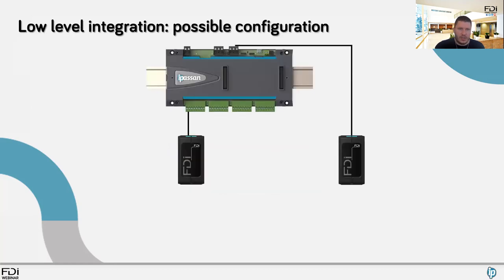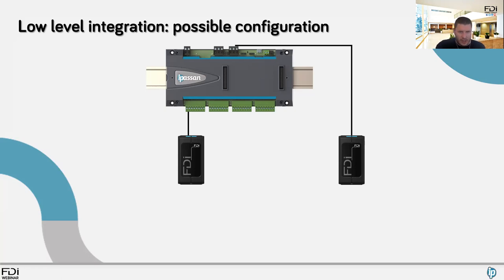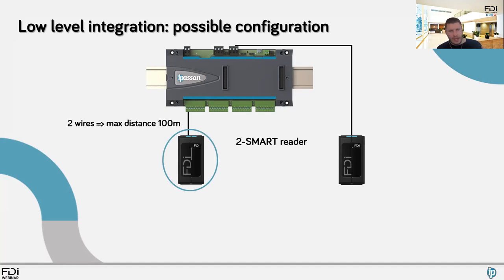No IT knowledge is required for low-level integration — it's an easy and straightforward installation. Even though we call it low-level integration, you can manage a lift of up to 110 floors. Using FDI's low-level integration, you can install either two-wire bus Two Smart Readers or RS485 readers. The distance limit between the controller and Two Smart Readers is 100 meters, but with RS485 readers you can install at up to 1000 meters from the controller.